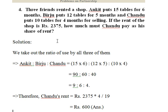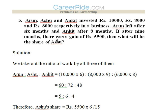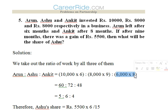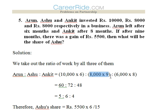Fifth question: Arun, Ashu, and Ankit invested rupees 10,000, rupees 8,000, and rupees 6,000 respectively in a business. Arun left after six months and Ankit after eight months. After nine months there was a gain of 5500. What is Ashu's share? Arun is there for six months: 10,000 × 6. Ankit is there for eight months: 6,000 × 8. Ashu stays the full nine months: 8,000 × 9. The ratio works out to 5:6:4.